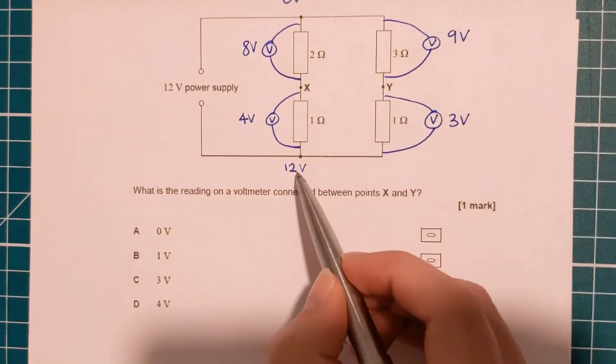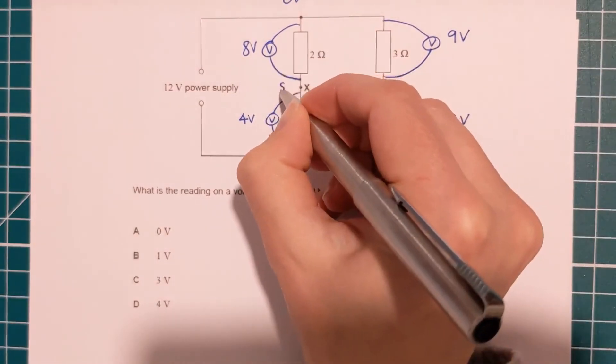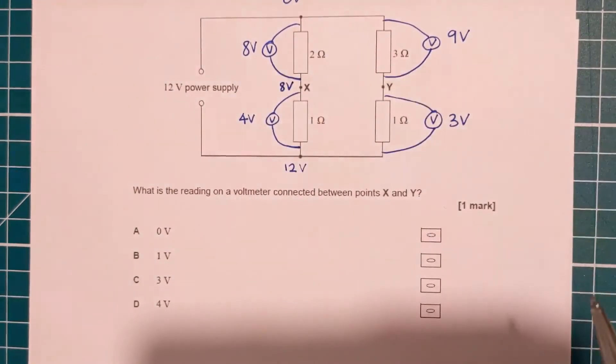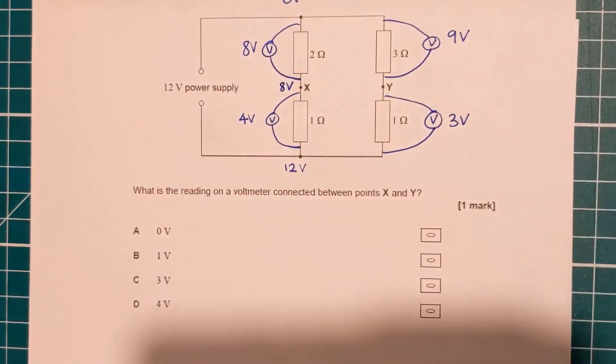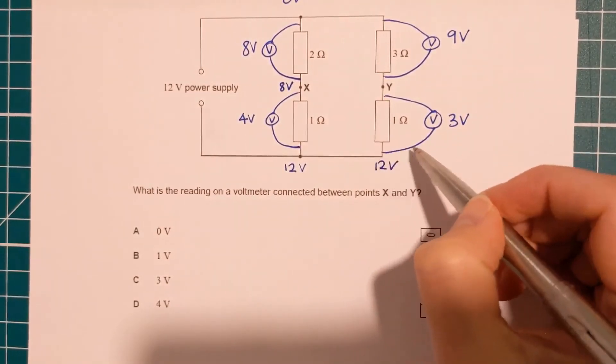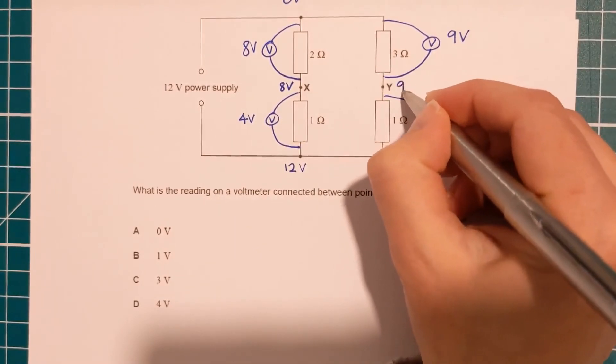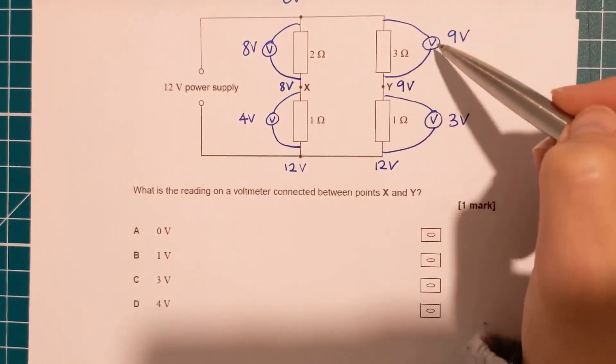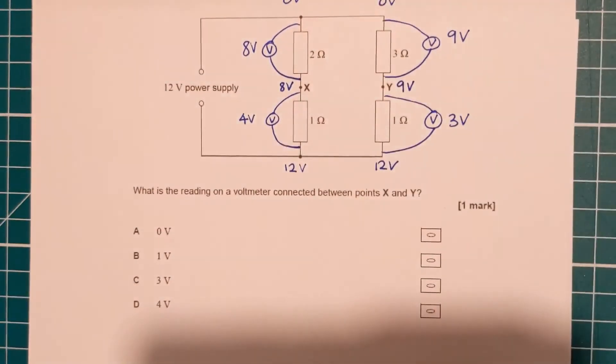Okay. So if the potential here is 12, and then we use up four, that means the potential at X is eight volts, and then we use up the remaining eight to get back to zero. That's right. And then over here, we're starting at 12, and we use up three. So at Y, that means we're going to have nine volts, and then we use that nine to get back to zero on the other side. So that's right.